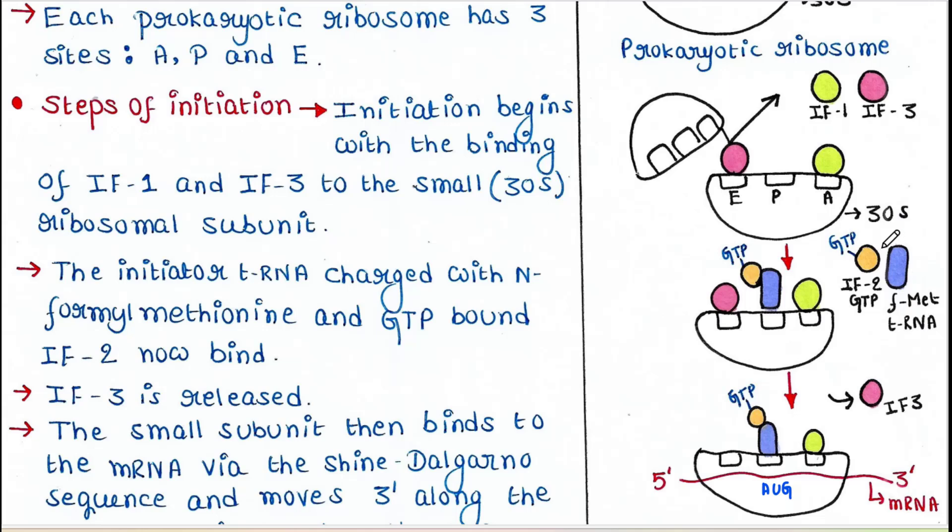Now two new molecules come to join. One is GTP-bound IF2 and the other one is a tRNA, but this tRNA is special. Why? It is charged with an amino acid. That means an amino acid is attached with this tRNA.